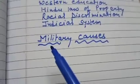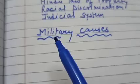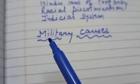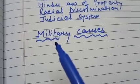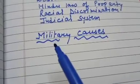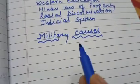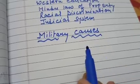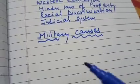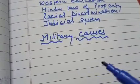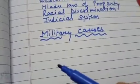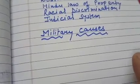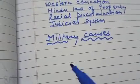The next cause was military causes — related to the army and soldiers. This revolt is also known as Sepoy Mutiny because it was started by soldiers at Meerut Cantonment. The Sepoys had helped the British establish their empire in India, but instead of receiving awards or promotions, they were humiliated by the British.